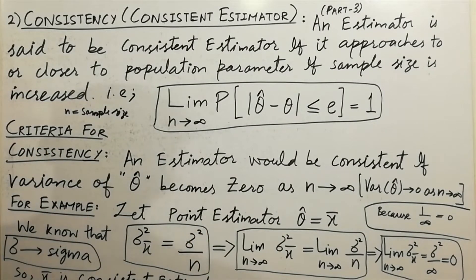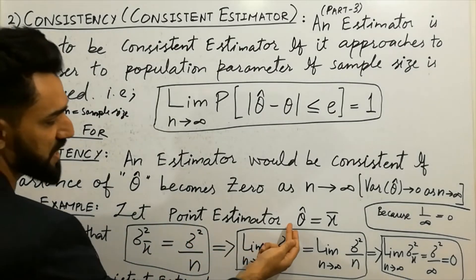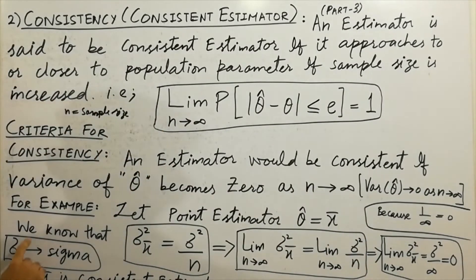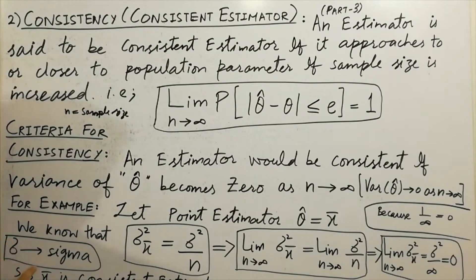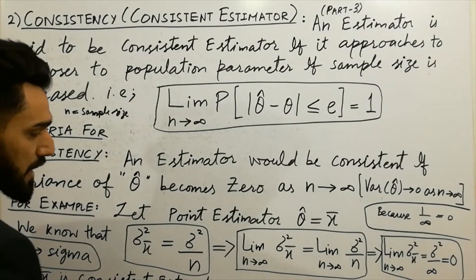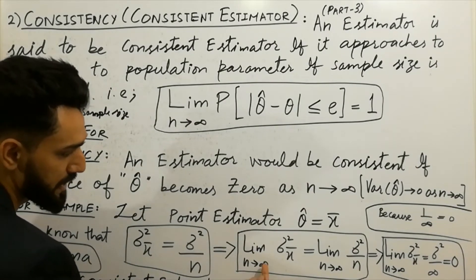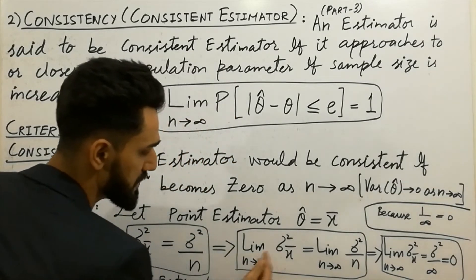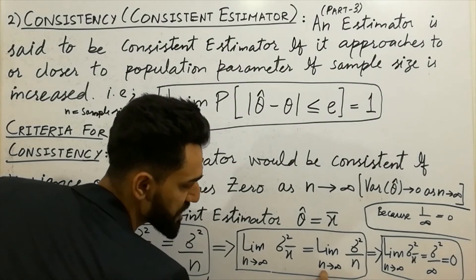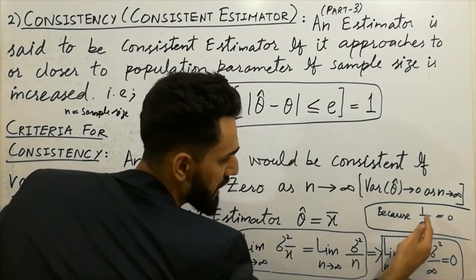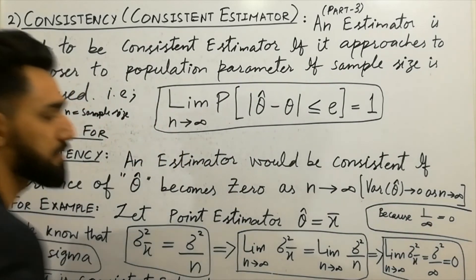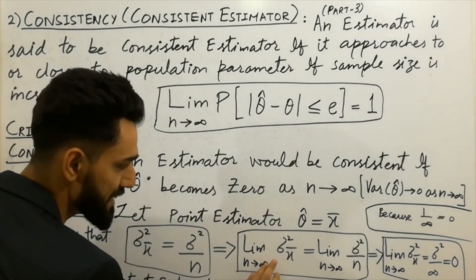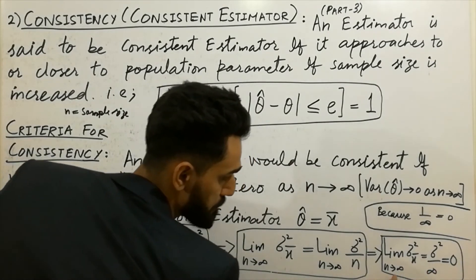For example, let's take the point estimator theta hat equals x-bar. We know that the variance of x-bar, sigma squared of x-bar, is equal to sigma squared over n. Taking the limit on both sides as n approaches infinity, sigma squared over n becomes sigma squared times 1 over infinity, which equals zero. So the variance of theta hat becomes zero as n approaches infinity.